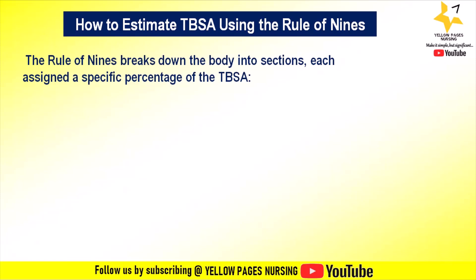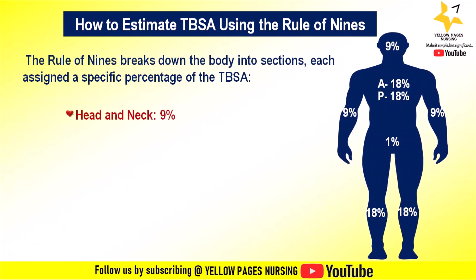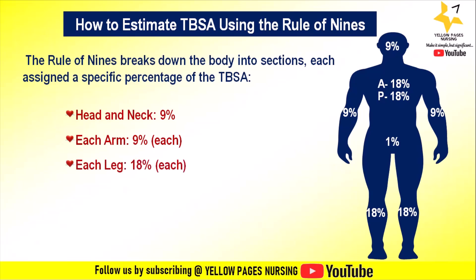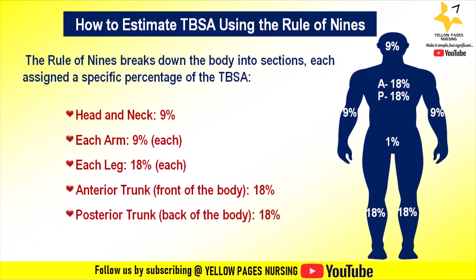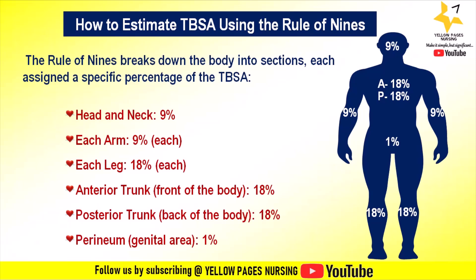The breakdown is as follows: head and neck — 9%, each arm — 9%, each leg — 18%, anterior trunk (front of body) — 18%, posterior trunk (back of body) — 18%, and perineum (genital area) — 1%. Note that a patient's palm is approximately 1% of total body surface area and can be used for estimating patchy areas. You can easily memorize this using 2 nines and 3 eighteens.